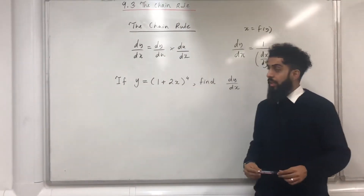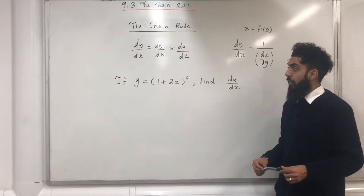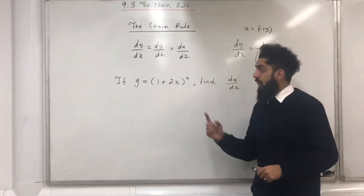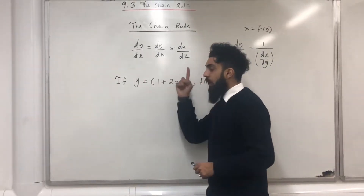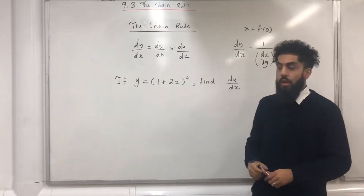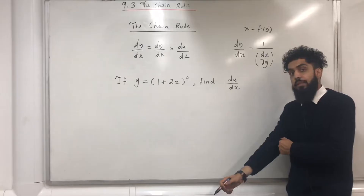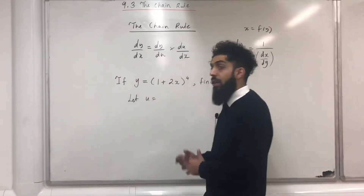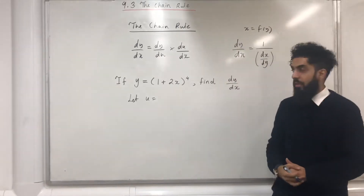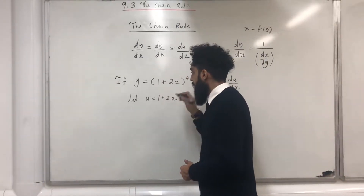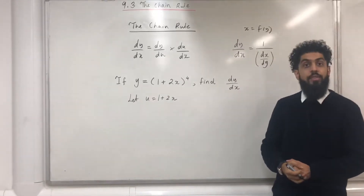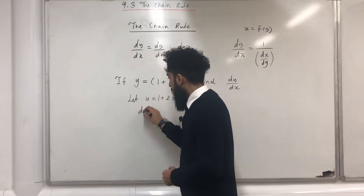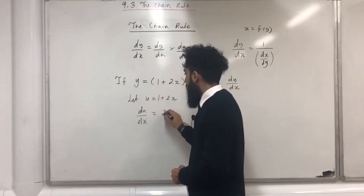Let's have a look at a question. If y equals (1 plus 2x) to the power of 4, find dy over dx. We can differentiate this using the chain rule. The way to do this is to first of all let u equal to what you have inside the bracket — that is 1 plus 2x. The next step is to find du over dx, which is equal to 2.